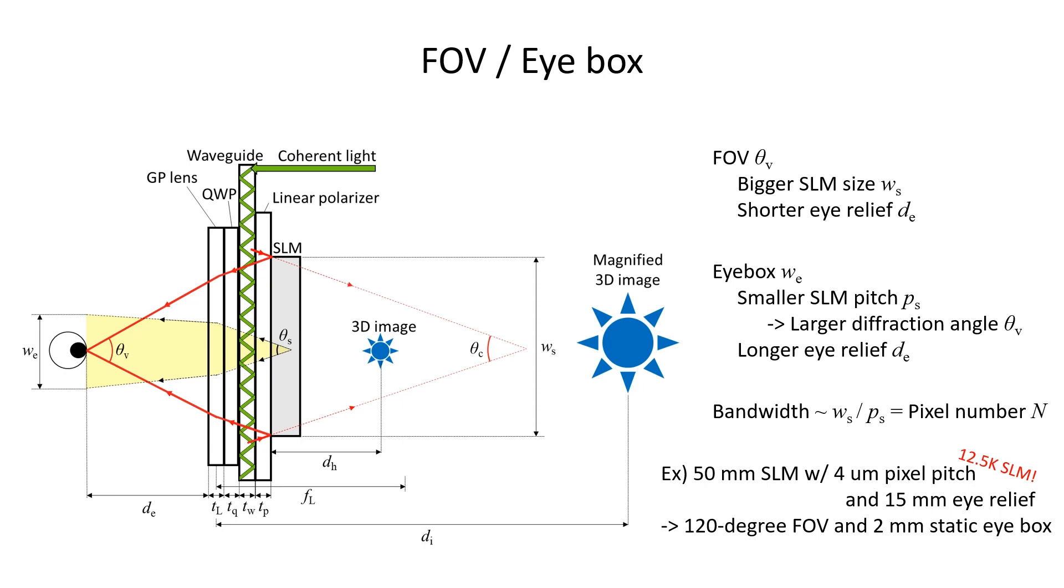In holographic glasses, the field of view is determined by the size of SLM and the eye relief. The bigger SLM creates bigger field of view, of course, and the shorter eye relief also provides a bigger field of view because it can bring the SLM closer to the eye.